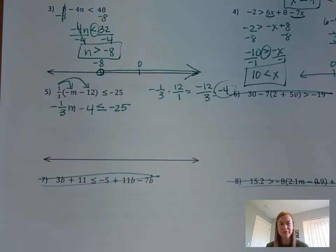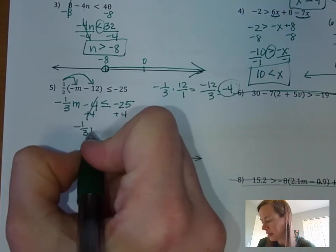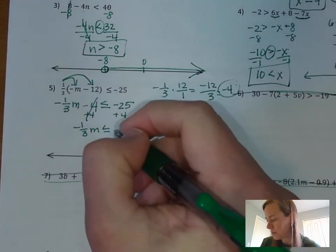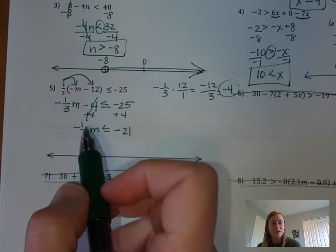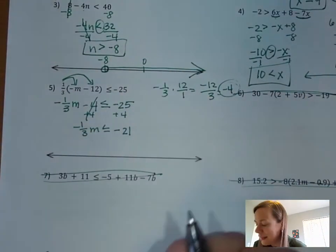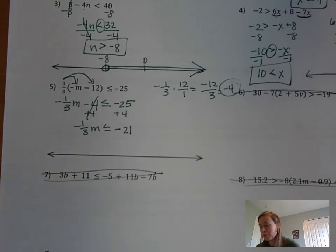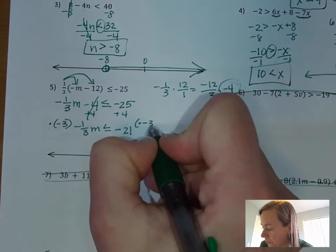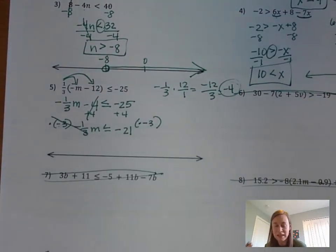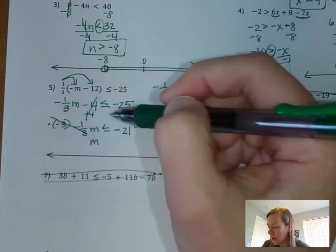So we have negative one-third m minus 4 is less than or equal to negative 25. Get rid of the negative 4 by adding it to both sides — that goes away. We're left with negative one-third m is less than or equal to negative 21. Now get rid of the negative one-third by multiplying by its reciprocal, which is negative 3. Multiplying both sides by negative 3 — and we flip the sign since we're multiplying by a negative. Negative 3 times negative one-third equals positive 1, leaving just m on that side.